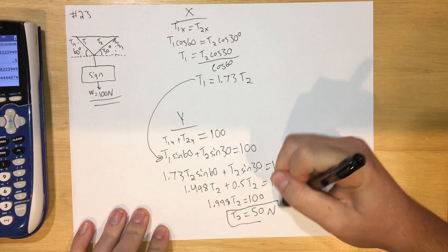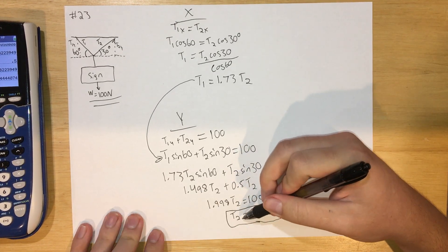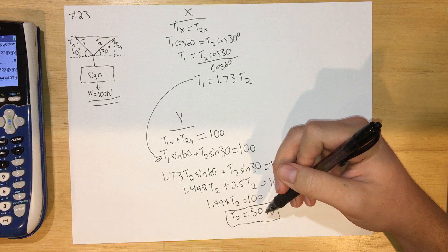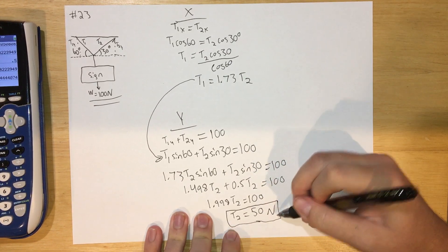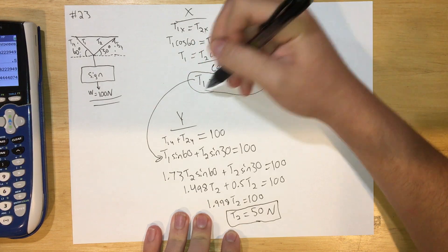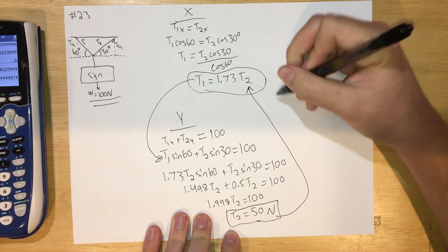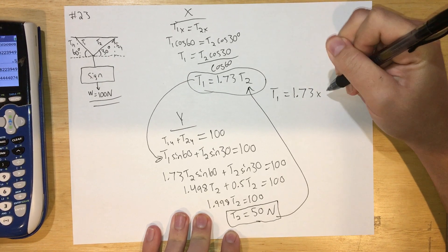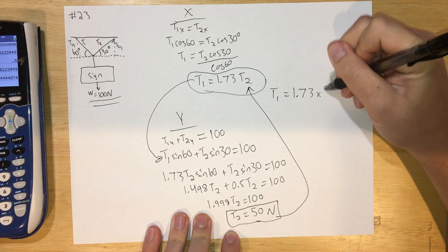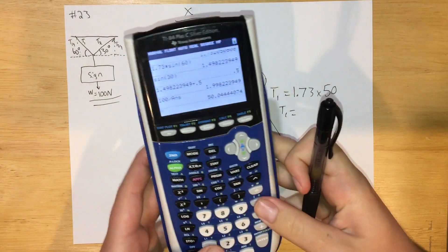Now that I know T2 equals 50 newtons, I need to find what T1 is. So I can plug this into any equation earlier, and I'm just going to pick an easy one. So let's see, I'll plug this one—looks nice and easy to me. So I'll take this T2 and plug it in here. So T1 equals 1.73 times T2, which we just said is 50, so that means T1 equals, let's type in my calculator, equals 86.58 newtons.